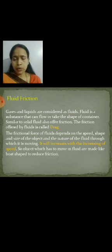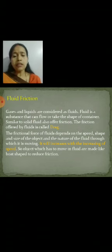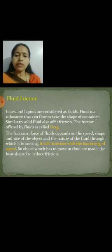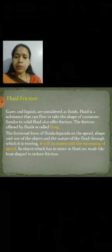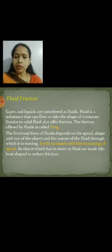For example, an aeroplane flying in the air also has friction with the air. To reduce that friction, the shape of the aeroplane is made streamlined so that it moves properly through the air. The frictional force of fluids depends on the speed, shape, and size of the object, and the nature of the fluid through which it is moving.